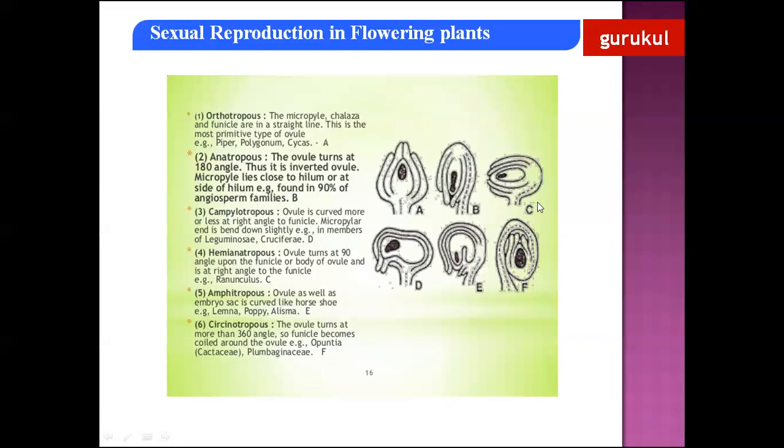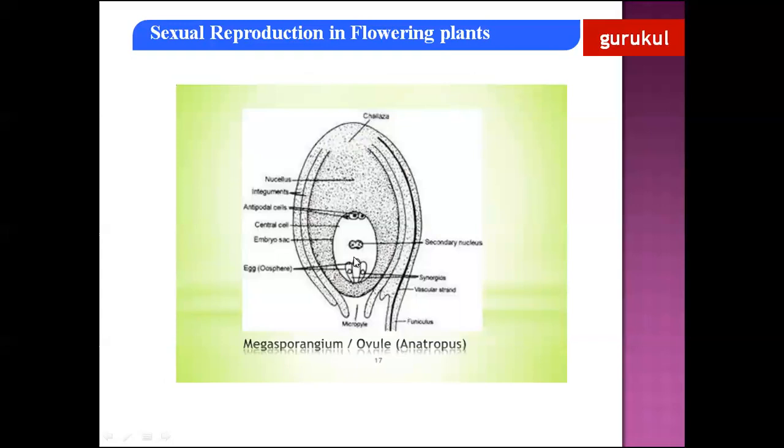The last type is circinotropous, where the ovule turns more than 360 degrees and the funicle becomes coiled around the ovule. Circinotropous ovule is found in Opuntia, that is Cactaceae. These are the different types of ovules.